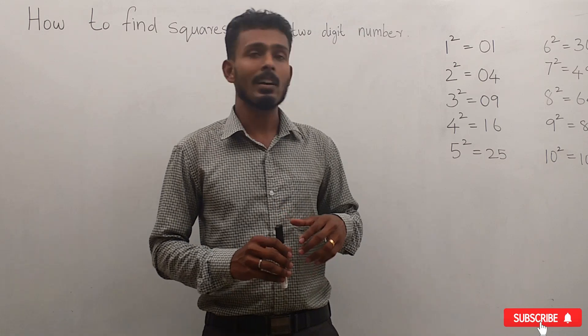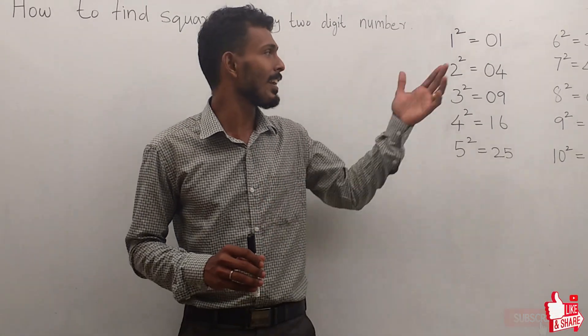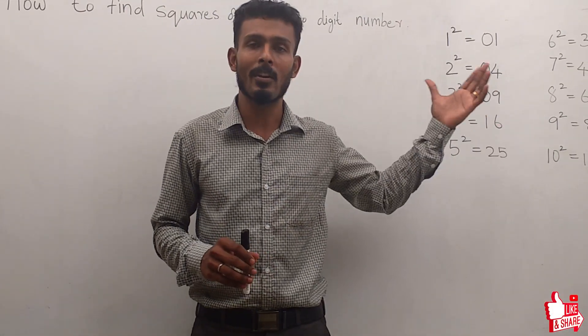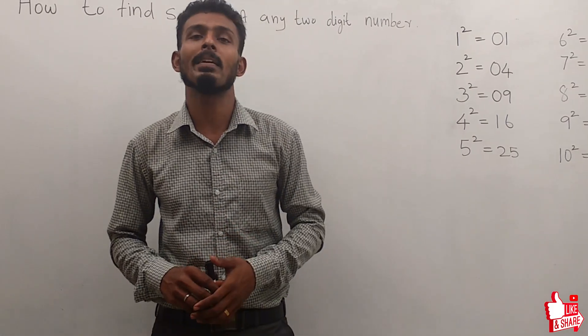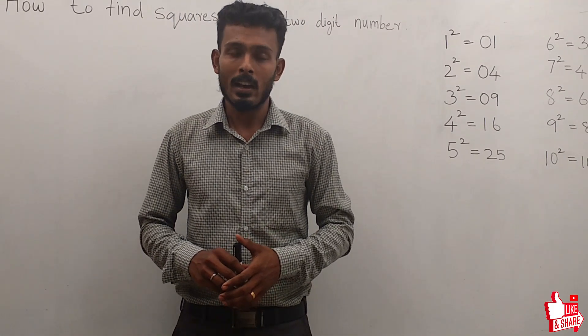We will show you two examples. If you know the value of a 9 square, we will show you up to 99 square values are easier to find. Let's take a video.